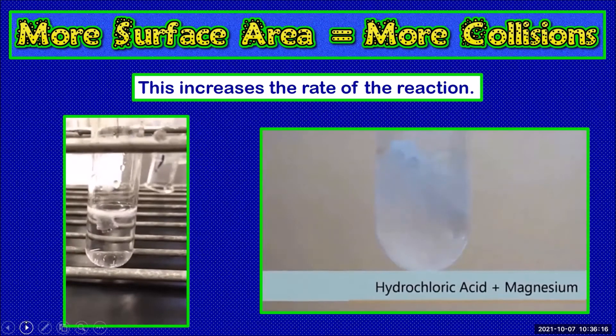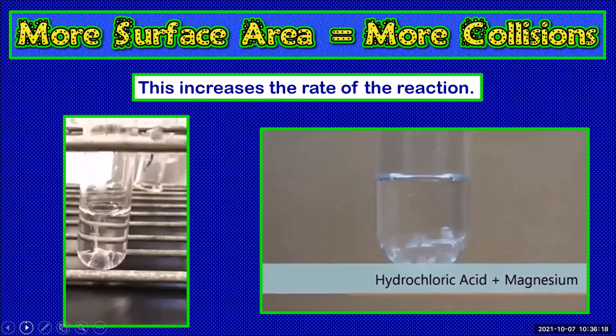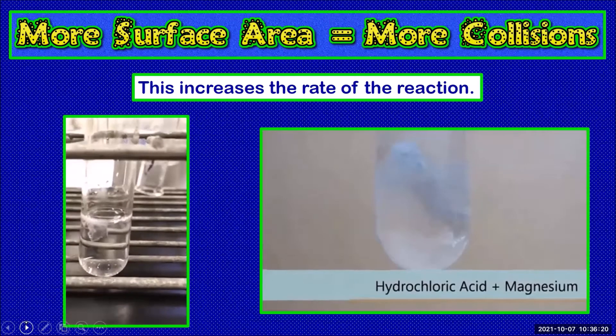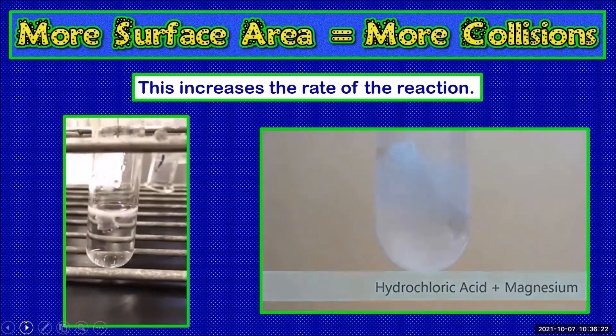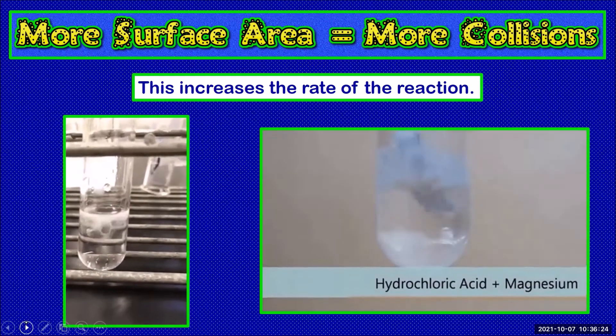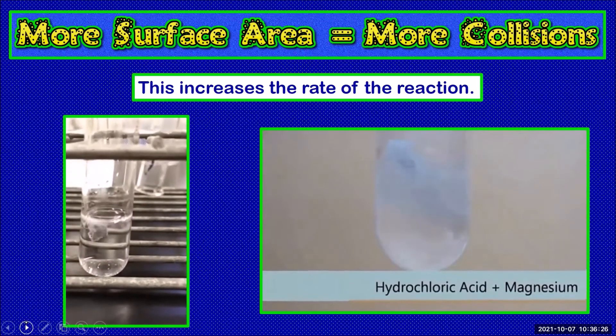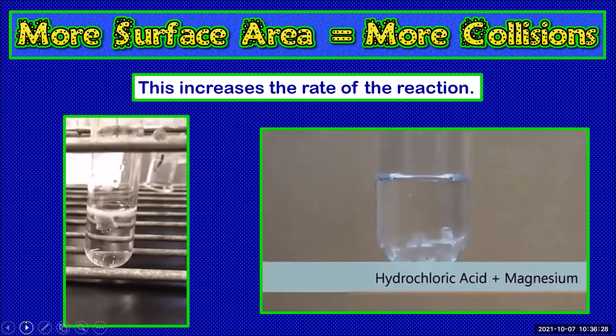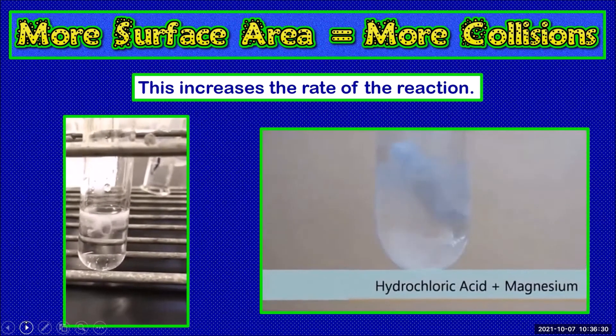So in summary, increasing the surface area of solid reactants leads to more of the solid being exposed to the other reactants. This increases the rate of collisions which statistically increases the rate of effective collisions. This increases the rate of reaction.